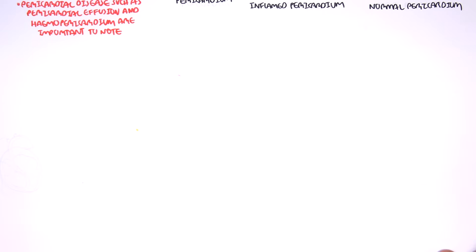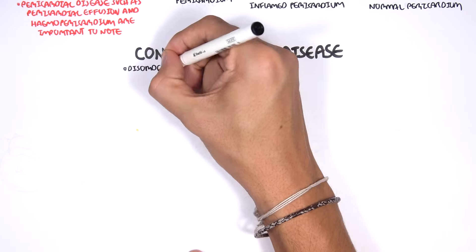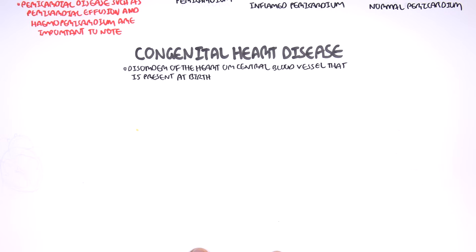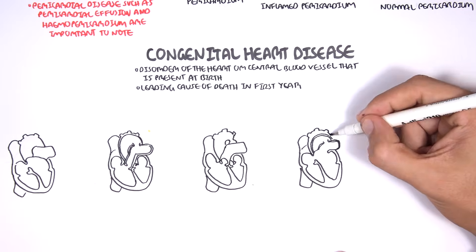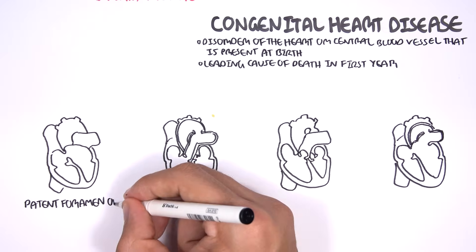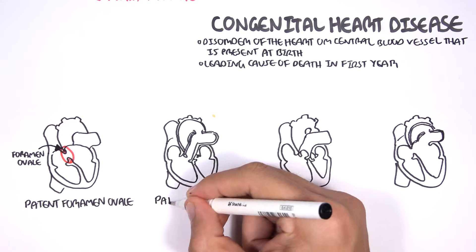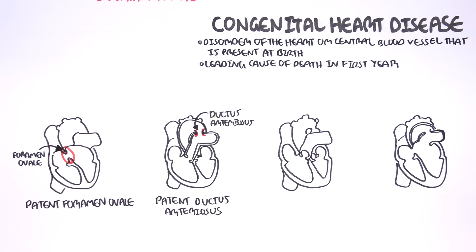The last cardiovascular disease category is congenital heart diseases, which are disorders of the heart or central blood vessels present at birth. These are actually the leading cause of death in the first year of life. Patent foramen ovale is where the foramen ovale does not close, resulting in a left-to-right shunt. Patent ductus arteriosus is where the ductus arteriosus does not close, resulting in a left-to-right shunt between the aorta and pulmonary artery.